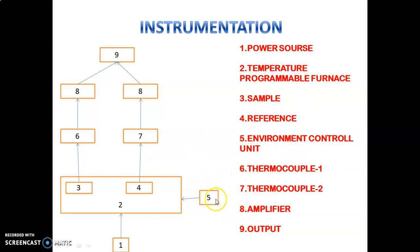If a regular, normal condition is required, that condition will be provided by the environment controller unit. Regarding the reference material, the important property is that it is stable under the range of temperature being studied. For example, if you are conducting this experiment between room temperature and 1200 degrees Celsius, whatever reference material is taken, it should be stable and should not undergo any physical, chemical, or phase change during that temperature period. However, the sample may undergo physical, chemical, or phase changes.